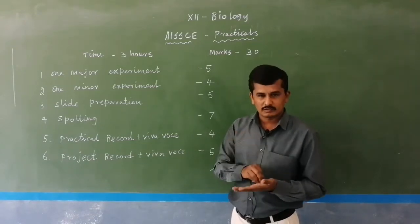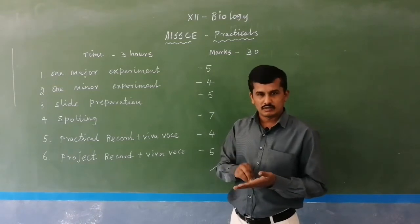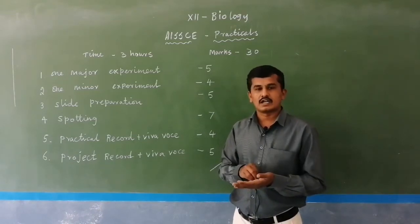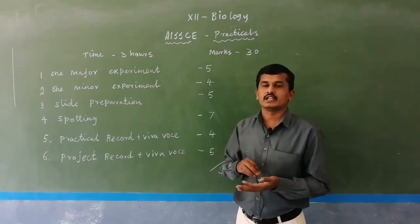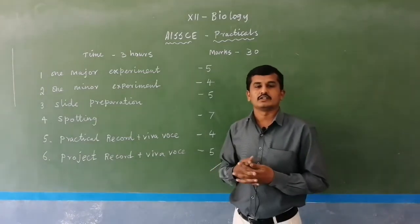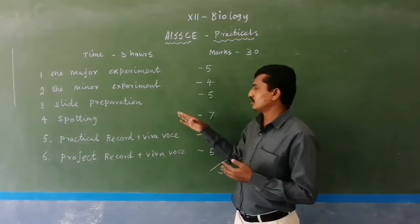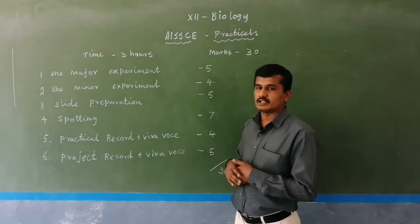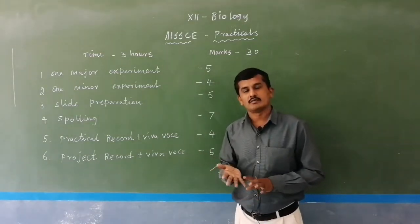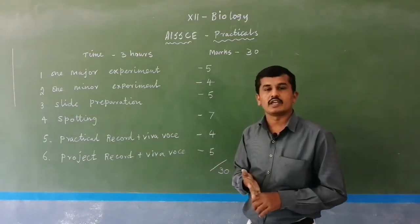For all of these sections, you write your theory part. For example, for major experiment, you write from aim to result; for minor experiment, aim to result; for slide preparation, aim to result including the drawings.